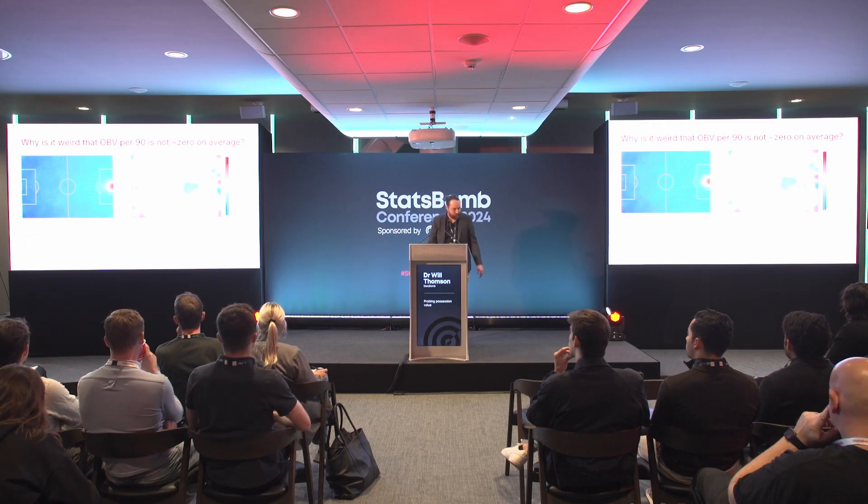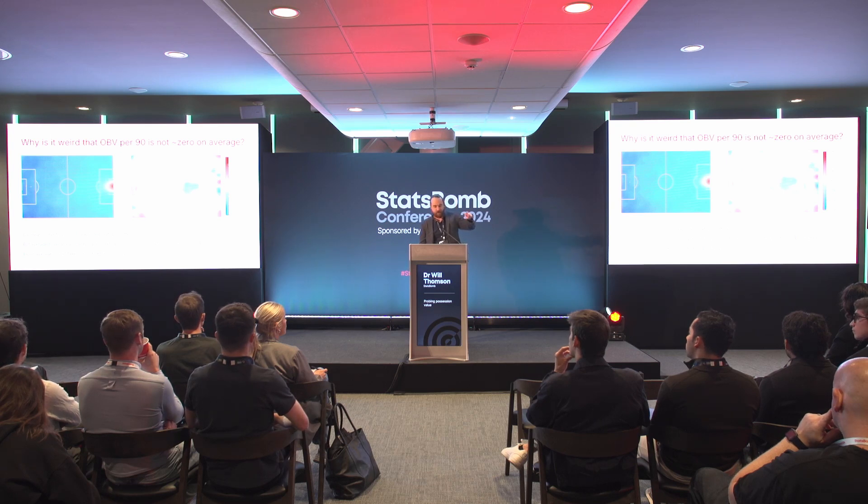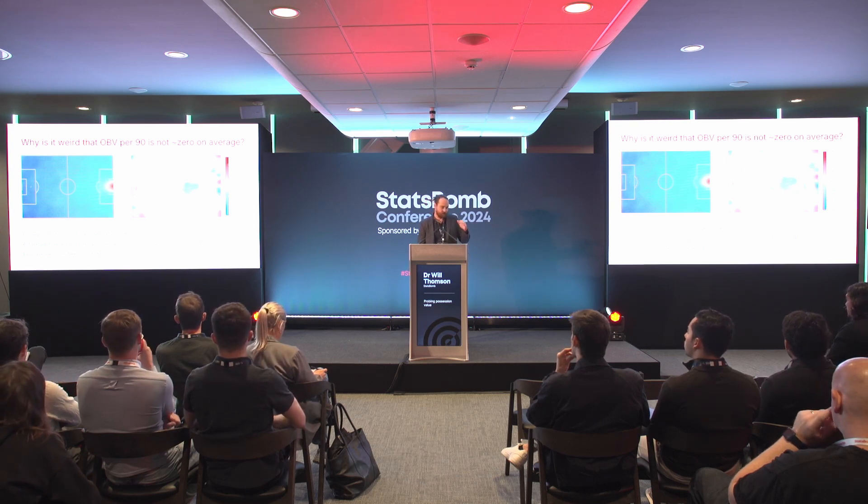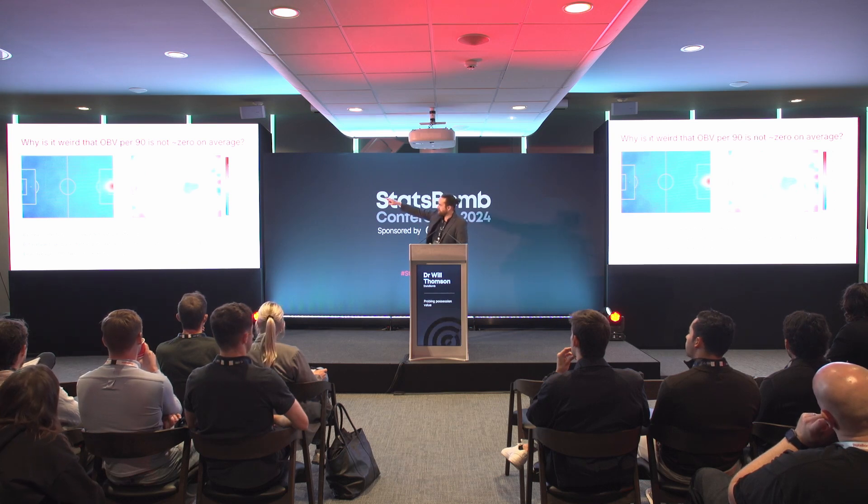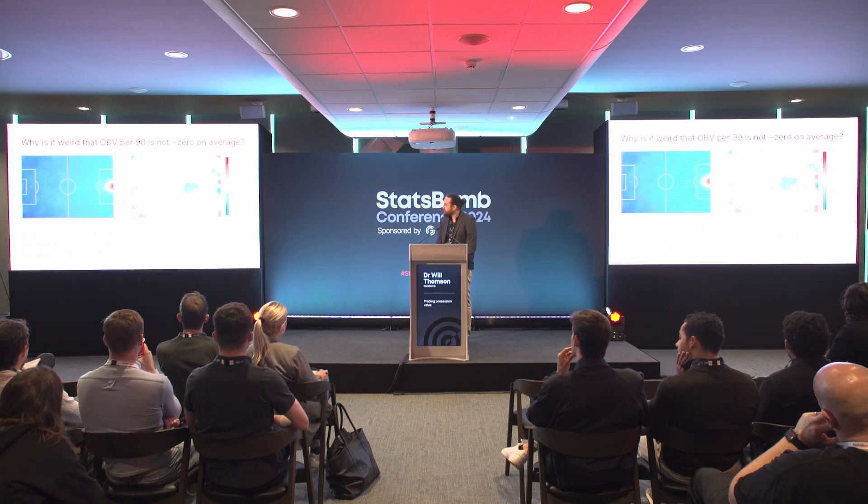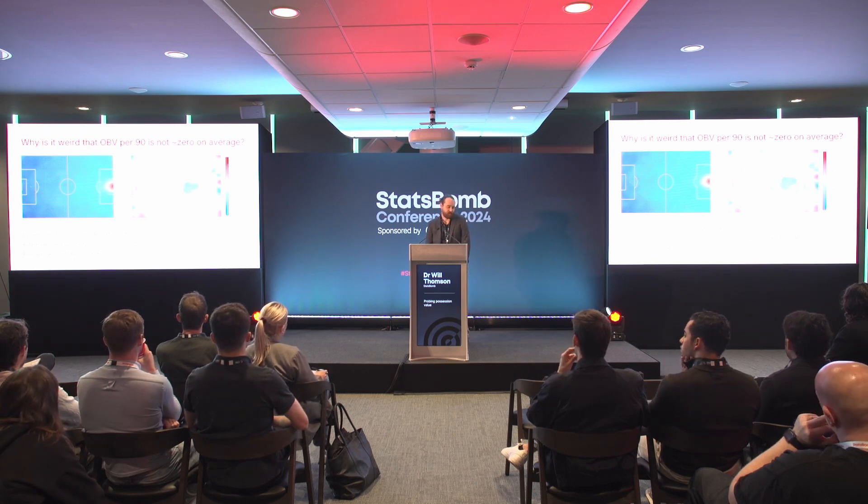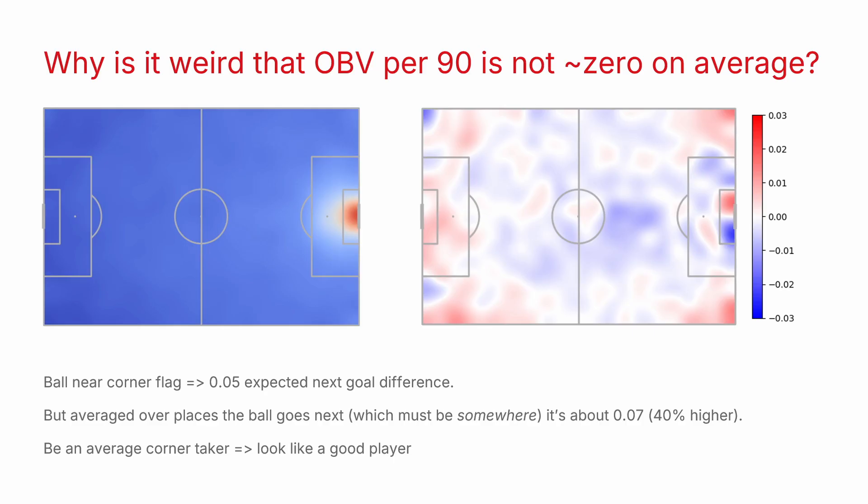You see a couple of interesting bits about this. Near a team's own goal line the average action value is slightly positive and you get a similar thing up round near the corners in attacking areas. The thing that I find odd about this is you've got two answers to the same question. On the left my picture is saying the expected next goal difference when you're near the corner flag is 0.05. But if I then look at everywhere the ball went after it was there and average the values of those states I get an answer that's about 40% higher than that. But the ball has to go somewhere from there. So those two things are kind of answering the same question but you get different answers.